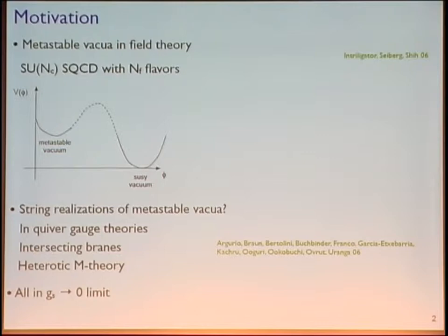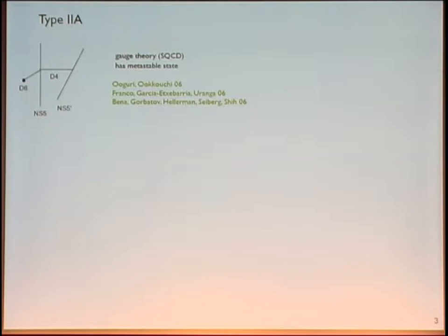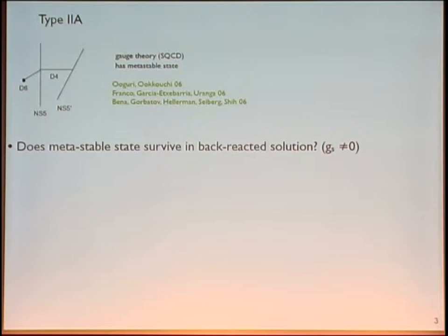The question is: do metastable vacua survive in the backreactive solution when g-string is not zero? In type IIa, SQCD can be engineered with D4 branes in between NS5 branes, and one can have flavors by having D4 branes and strings attached. This SQCD has metastable states. Not long after the paper of Intriligator, Seiberg, and Shih, people found the brane construction corresponding to these metastable states. But again, this is in the g-string going to zero limit.